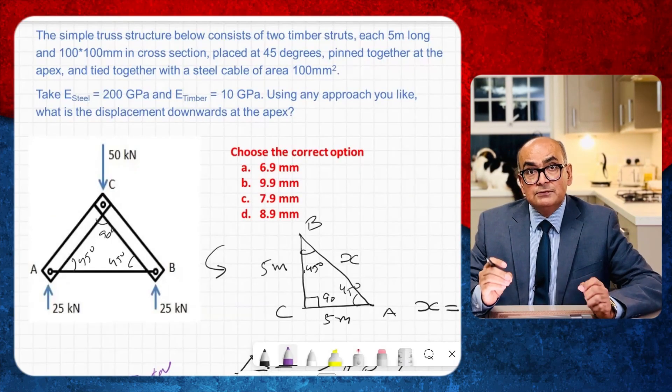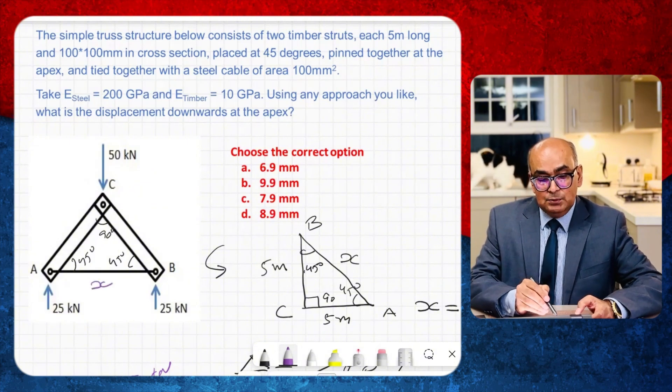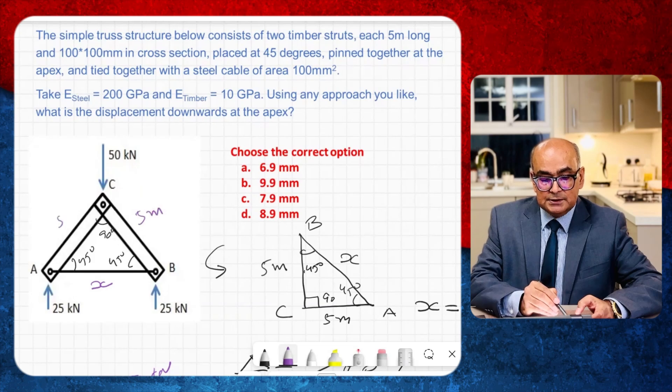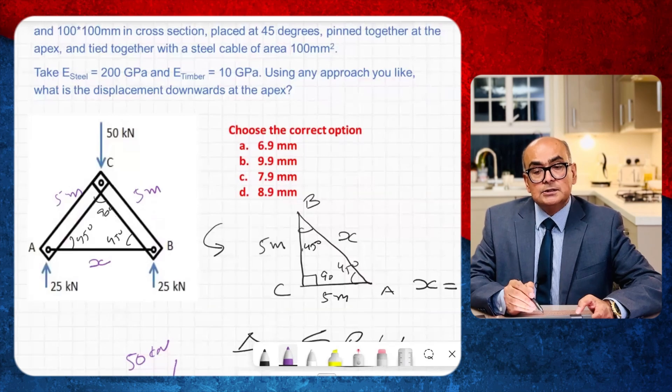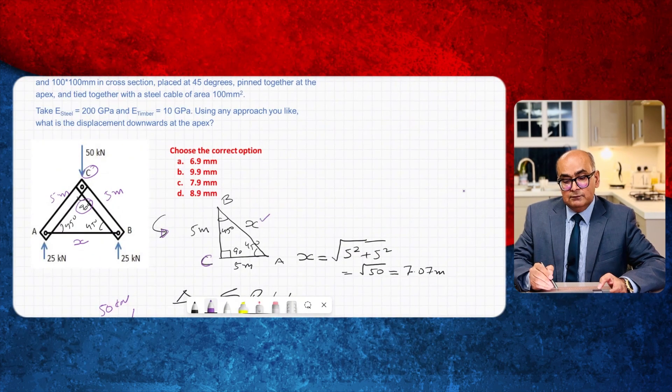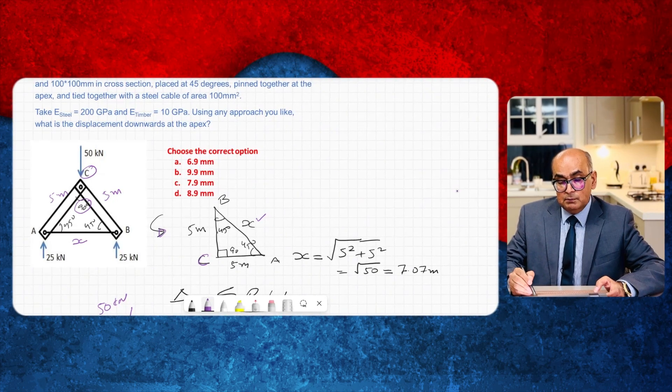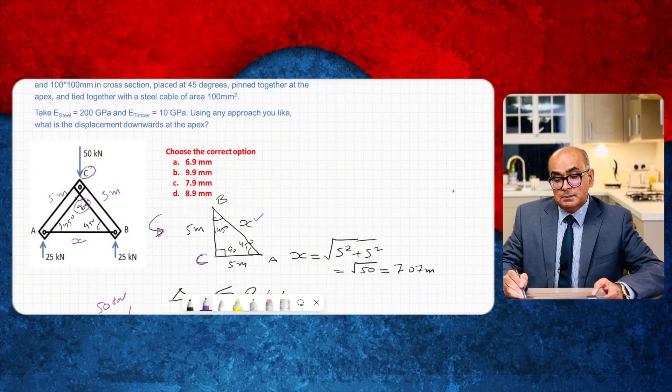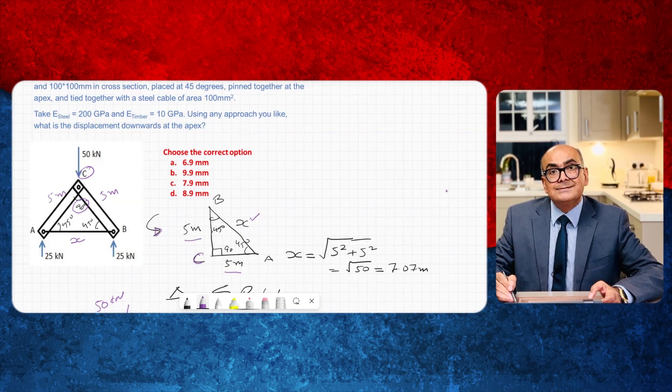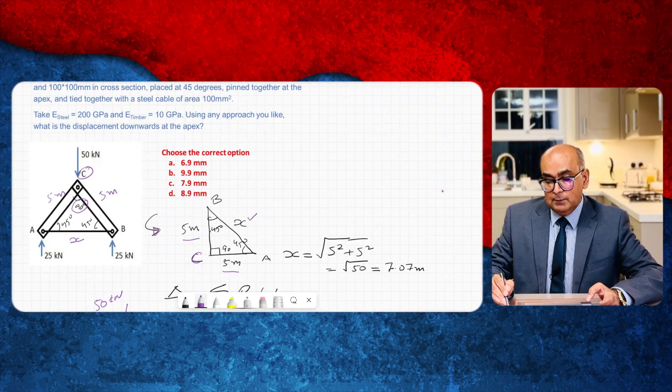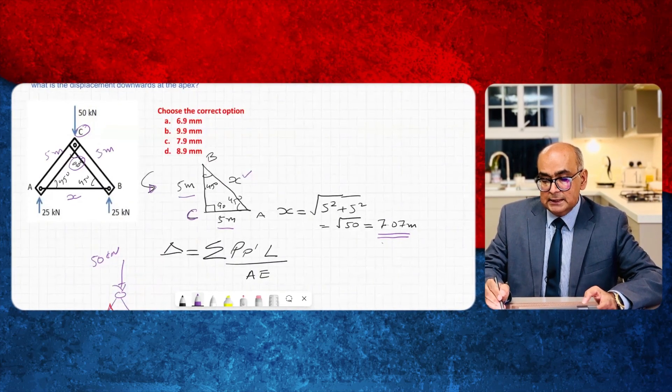For solving this question, the first thing which I would like is the dimension of steel cable because these dimensions are given five meters, five meters. For this I will be using Pythagoras theorem. x is the hypotenuse. By using Pythagoras theorem, under root summation of adjacent square plus opposite square, it will give me the length of hypotenuse which is 7.07 and this is the length of steel cable.